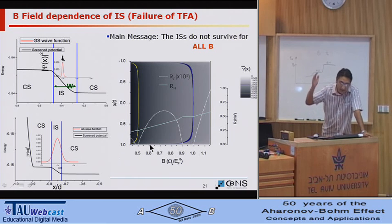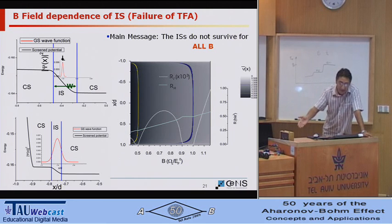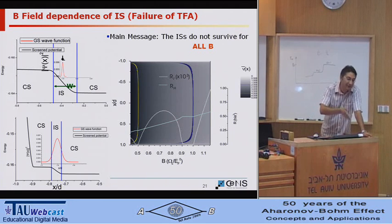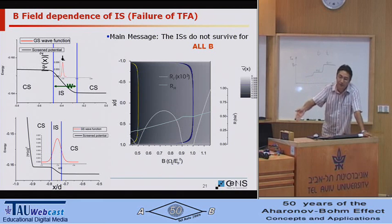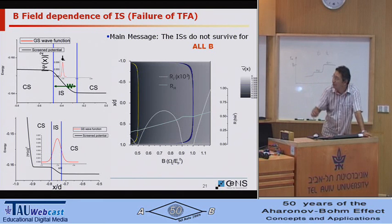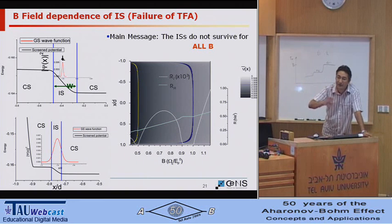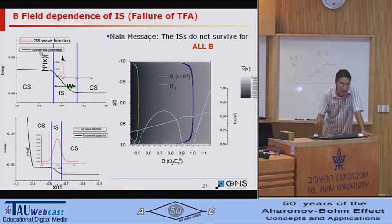So by changing the magnetic field, you go from incompressible strip to non-incompressible strip, back to incompressible strip, and so on. You go from one plateau to another plateau, and you can really do calculations in between two transitional plateau regions.